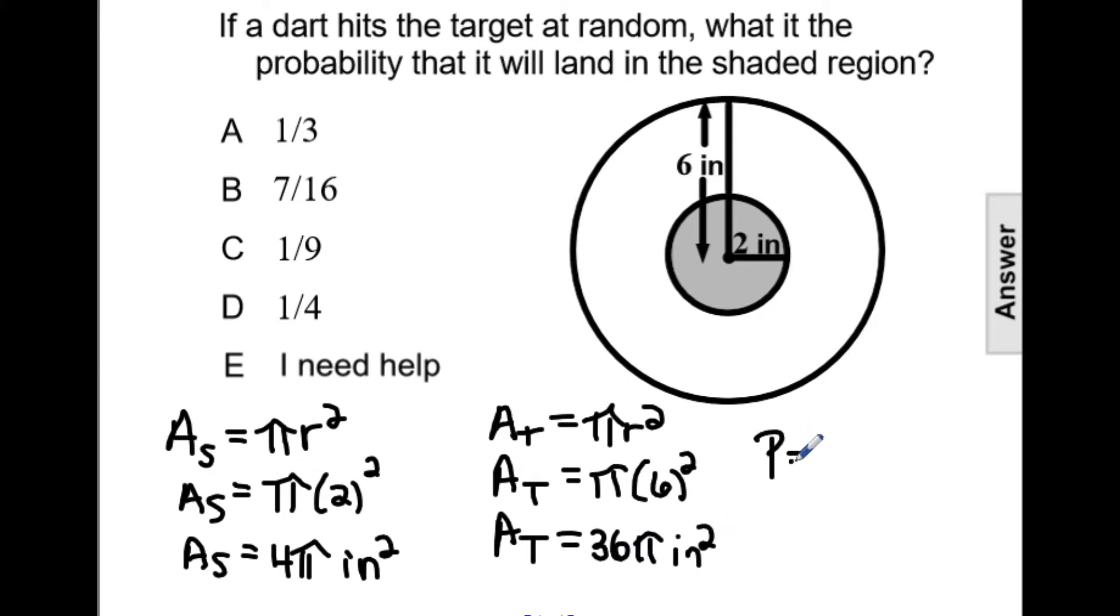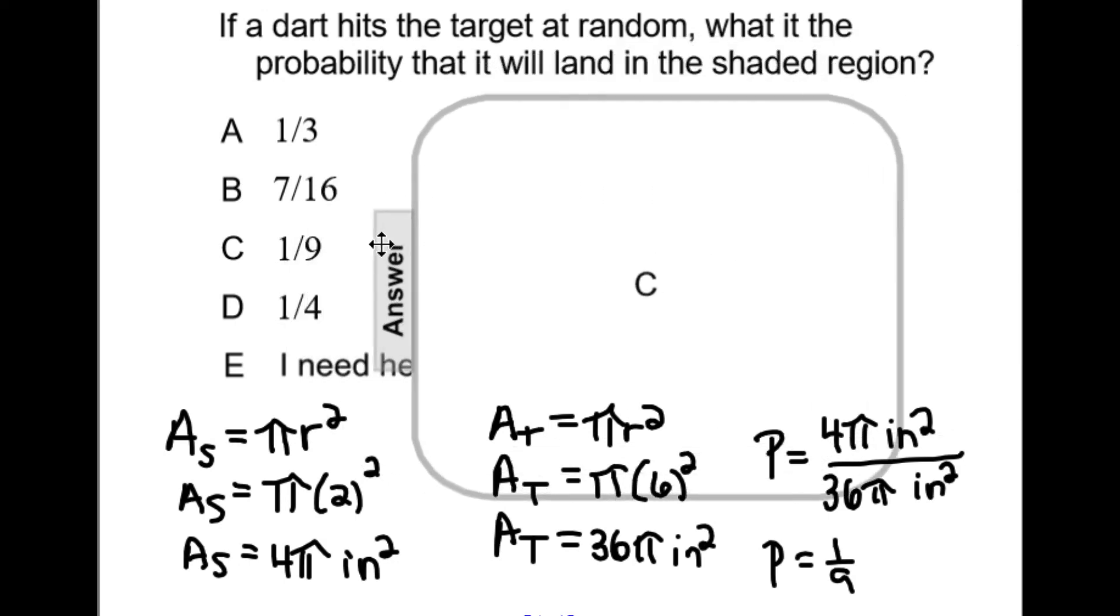Now the probability is putting the shaded over the total. So we would have 4 pi inches squared over 36 pi inches squared, which reduces to 1 over 9, making our answer C, 1 ninth.